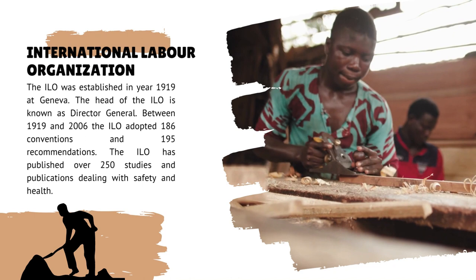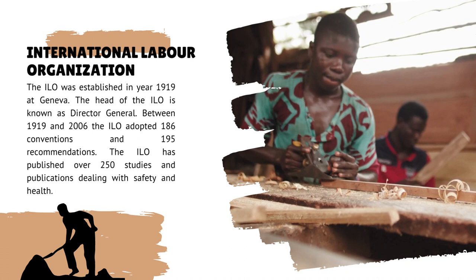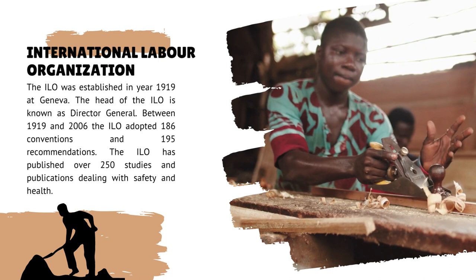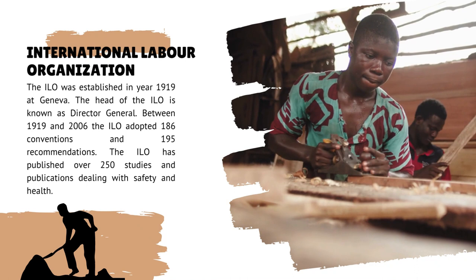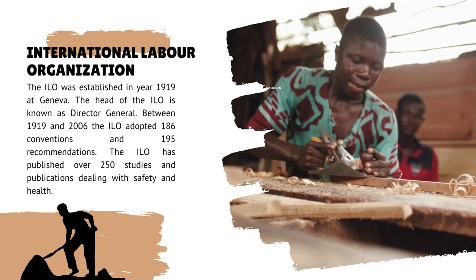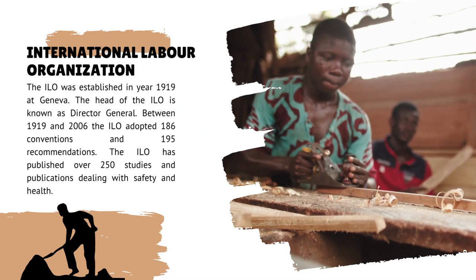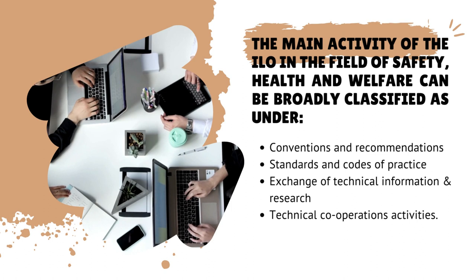The International Labor Organization was established in 1919 at Geneva. The head of the ILO is known as Director General. Between 1919 and 2006, the ILO adopted 186 conventions and 195 recommendations. The ILO has published over 250 studies and publications dealing with safety and health. Moving further, we will look towards the main activities of the ILO in the field of safety, health and welfare.